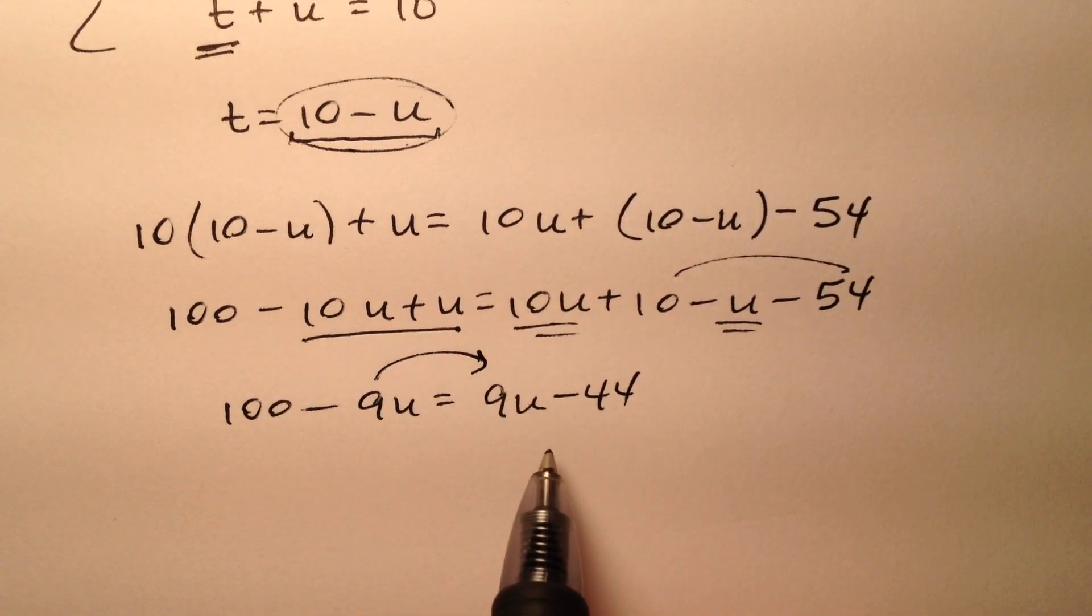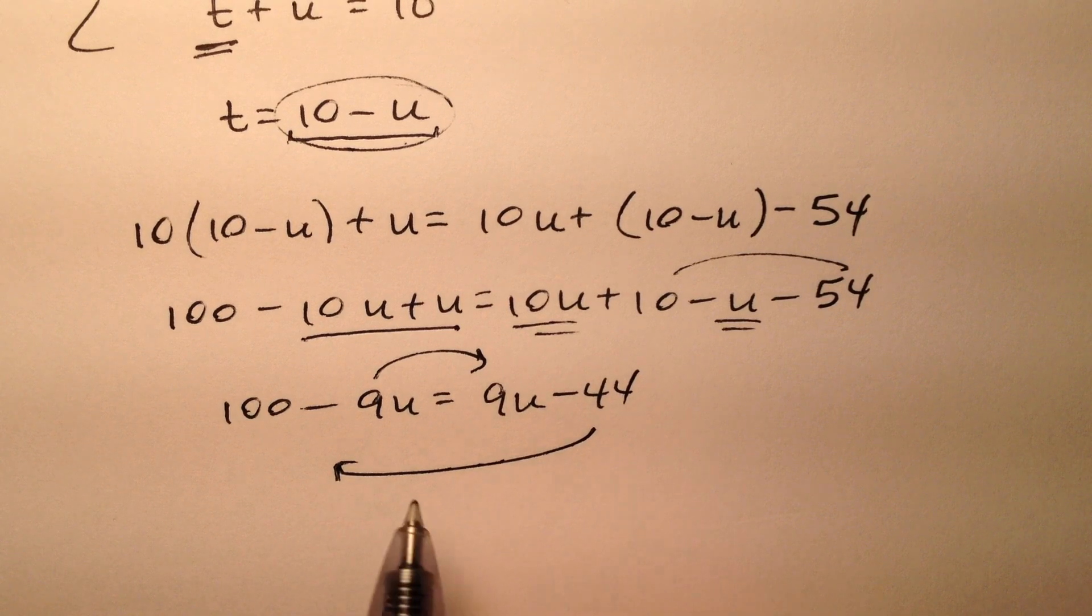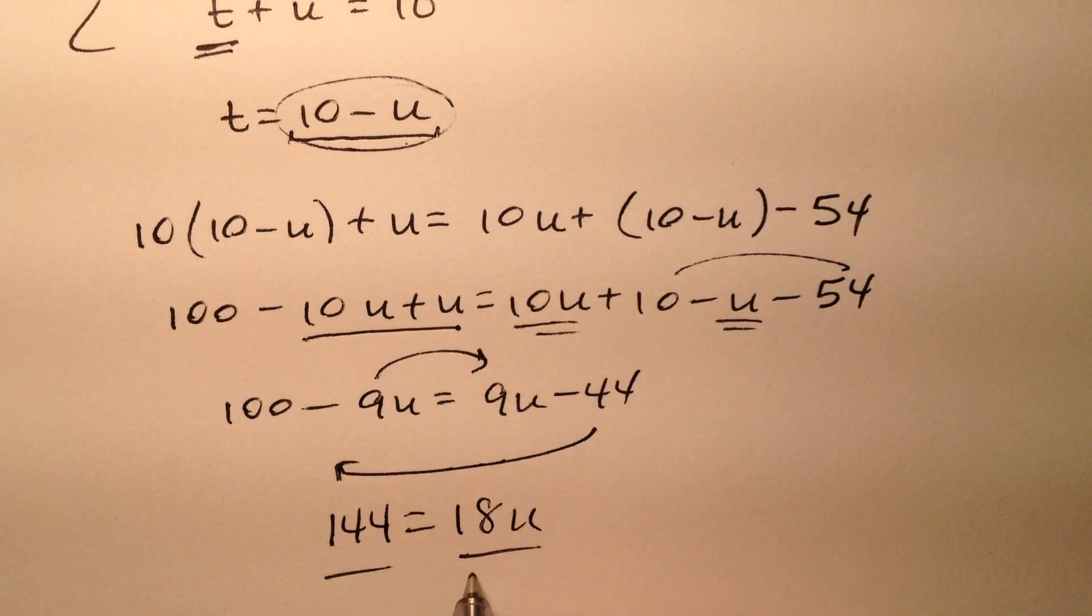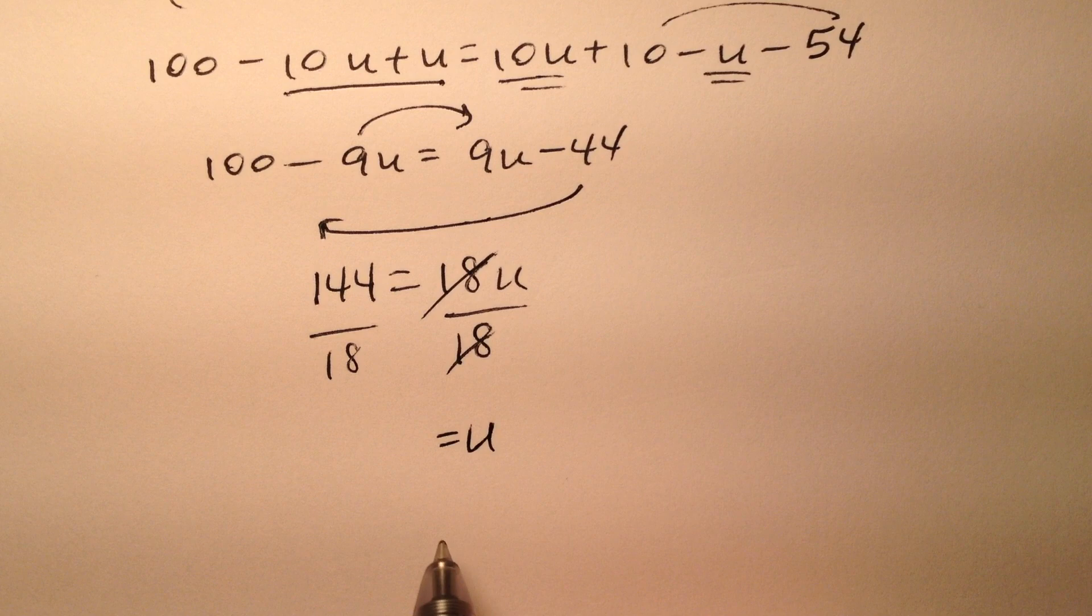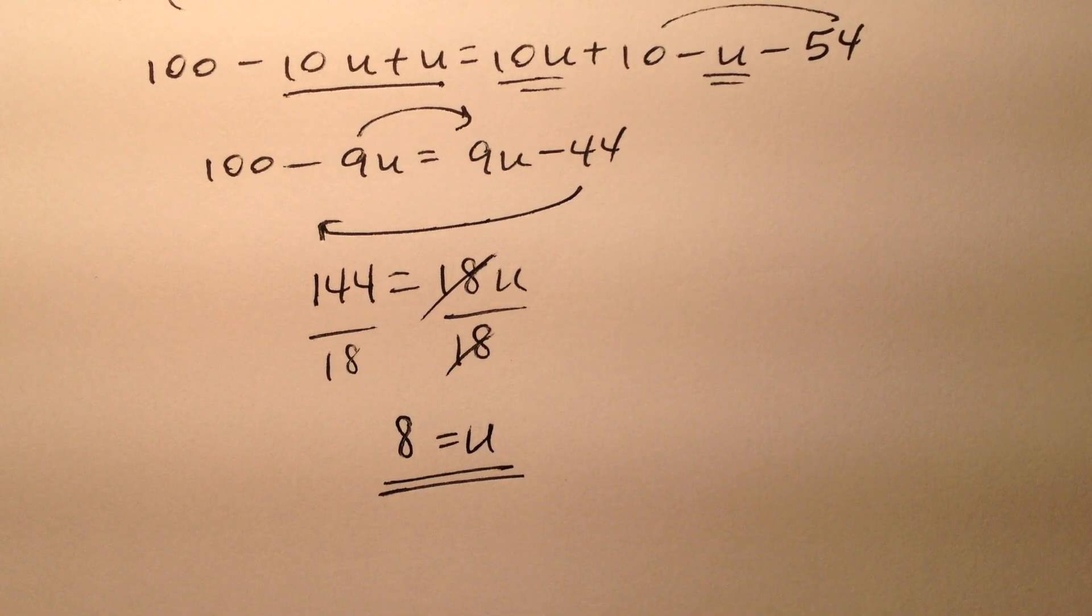Let's get our U's on this side and our constants on the other. So 144 equals 18U. When I divide both sides by 18, U is 8.